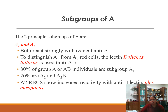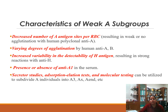There are two principal subgroups of A: A1 and A2. Both react strongly with reagent anti-A. To distinguish A1 from A2 red cells, the lectin Dolichos biflorus is used, which detects anti-A1. 80% of group A or AB individuals are subgroup A1, 20% are A2 or A2B. A2 RBCs show increased reactivity with the anti-H lectin Ulex europaeus.